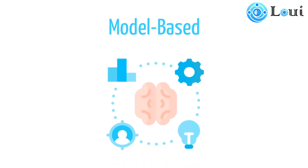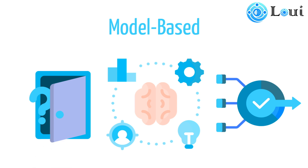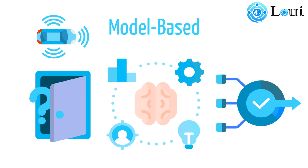Next, there are model-based agents. They know how things happen in the world and can predict what will happen if they take a certain action. Another feature of model-based agents is that they can handle unknown factors that can affect the outcome of their actions. For example, a self-driving car uses a model of the road and traffic to predict the outcomes of different actions, such as turning or braking, to plan a safe and efficient sequence of actions.